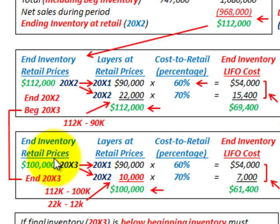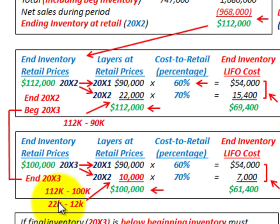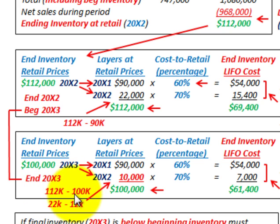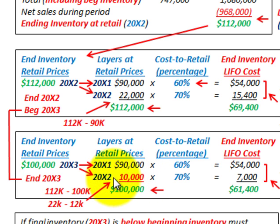The ending inventory at 20x3 of $100,000 is comprised of layers. The 20x1 layer remains at $90,000. But the 20x2 layer has changed: we started with $22,000 in that layer, but we had to account for $12,000 of usage — the difference between $112,000 and $100,000. So $22,000 less $12,000 gives us $10,000 remaining for the 20x2 layer.